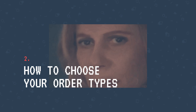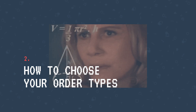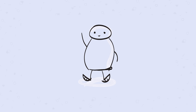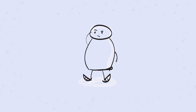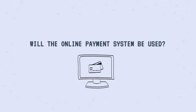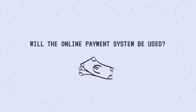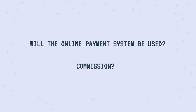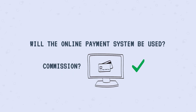But how do you choose your order types? I'll present to you a few questions about the type of transaction you're looking to facilitate. These will help you decide what kind of order type to create. When a customer wants to initiate a transaction, will the transaction have a price? Or will your listings be free? Will the online payment function of your marketplace be used? Do you want your customers to pay on the platform, or will they transact off-platform? Do you want to collect a commission on transactions? This is only possible with online payments.